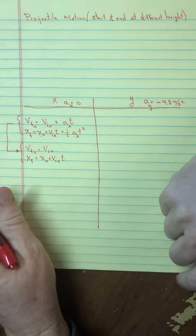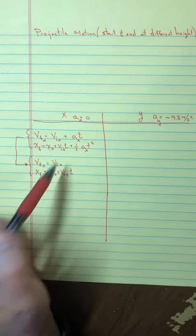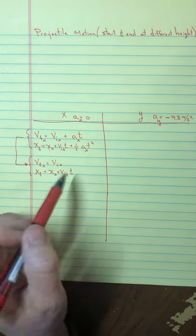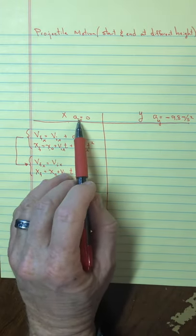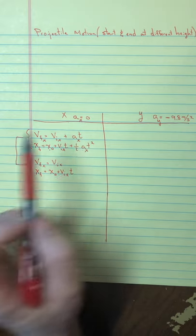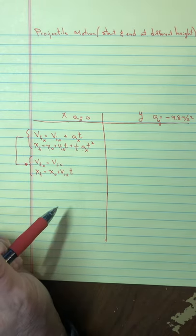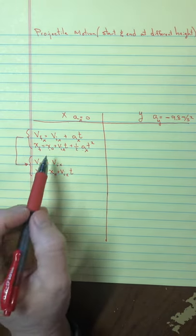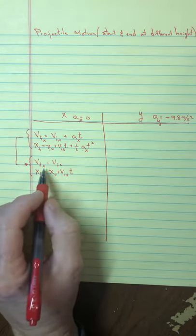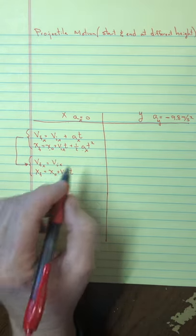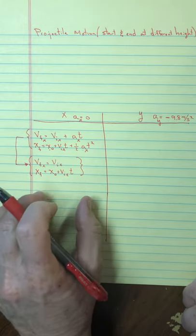That makes sense — there's no acceleration in the x direction, so it keeps its same speed. The second equation becomes: final position equals initial position plus initial velocity in the x direction times time, and then zero. So I'm calculating just in the x dimension. The acceleration is constant, so I can use these constant kinematics equations, and zero makes it even simpler. These are the two main equations I'll use in the x motion.